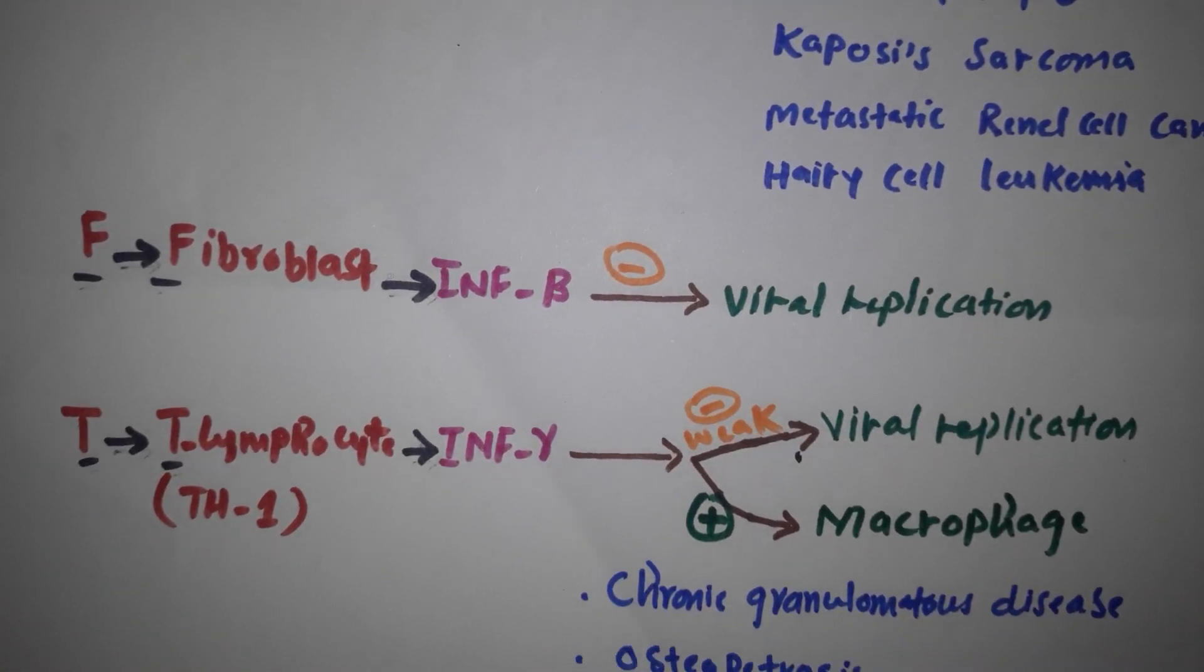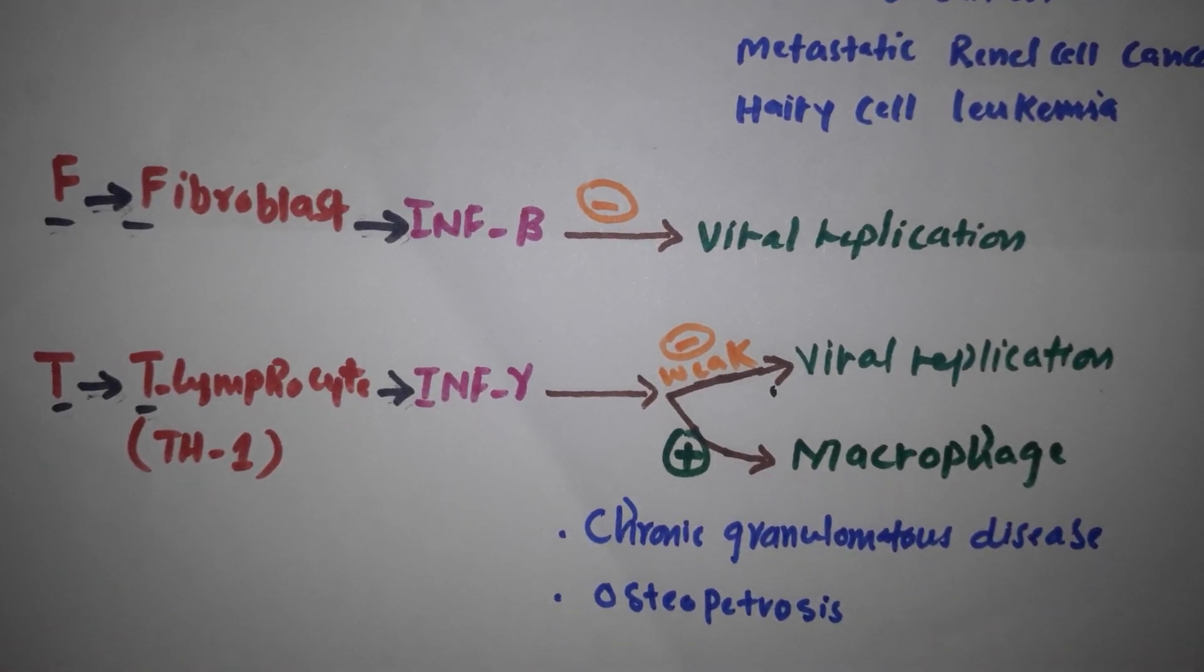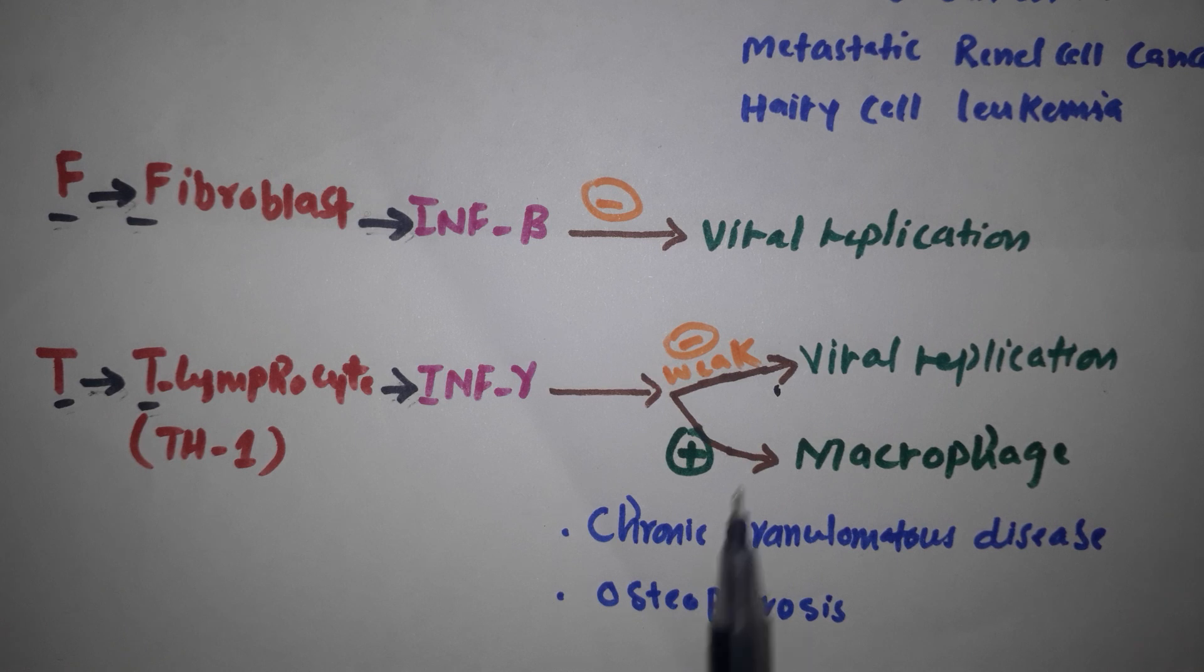F is for fibroblast. Fibroblasts secrete interferon beta, and the function of interferon beta is that it also inhibits viral replication.